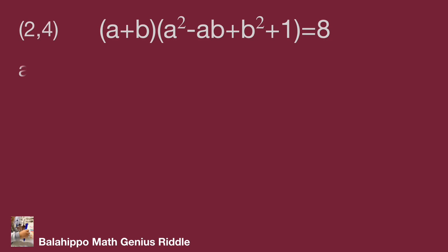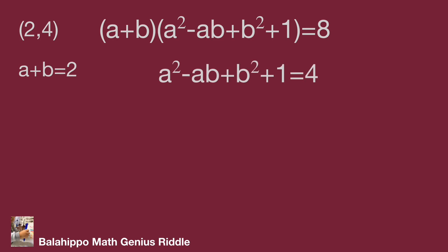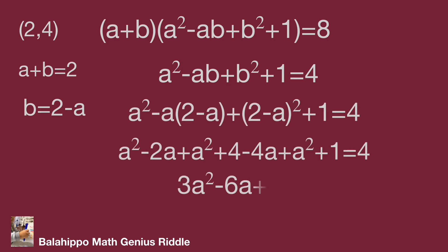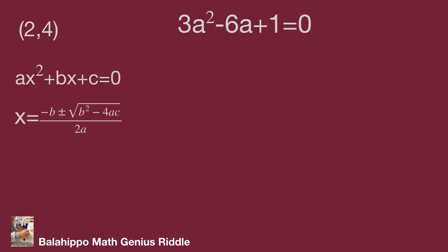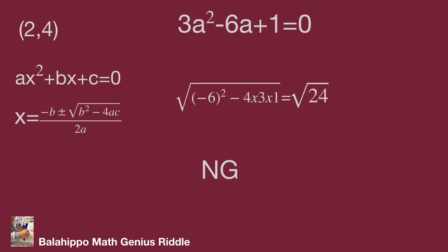In the (2, 4) number group: a plus b equal to two, a squared minus ab plus b squared plus one equal to four, and b equal to two minus a. Substituting and simplifying gives three a squared minus six a plus one equal to zero. Checking the discriminant: square root of (minus six squared minus four times three times one) equals square root of 24, which is not an integer. This is not the right number group.